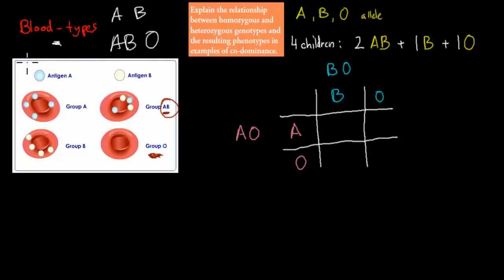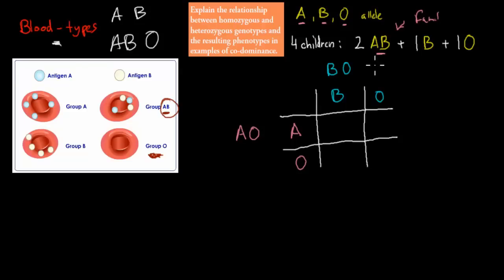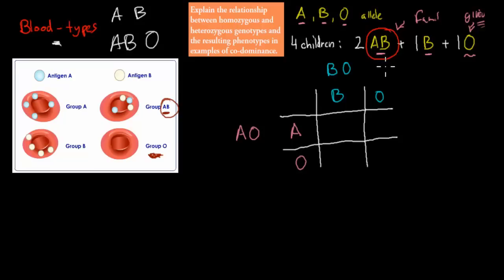The reason I'm talking about blood types is because it is a good example of codominance. We actually only have three different types of alleles: the A allele, the B allele, and the O allele. In my family, two of my siblings have AB blood, one sibling has B blood, and I am the unlucky one — I have O blood. The O can only give; they cannot take from anyone but O, but they can give to anyone else. There is no AB allele, yet we have AB blood, and I'll show you why this is an example of codominance.